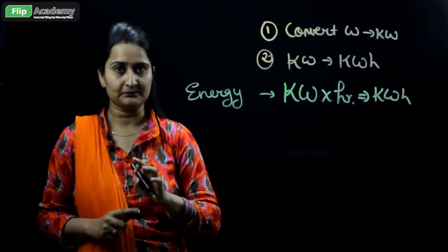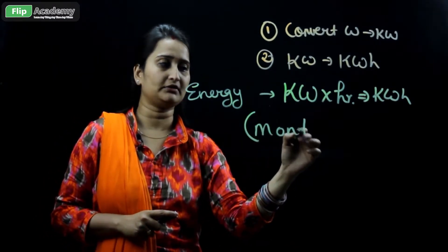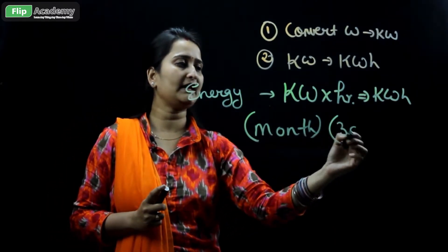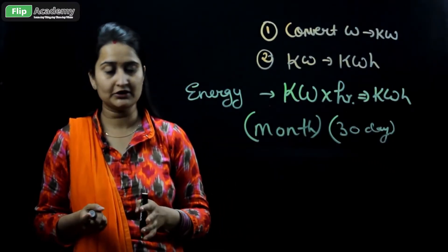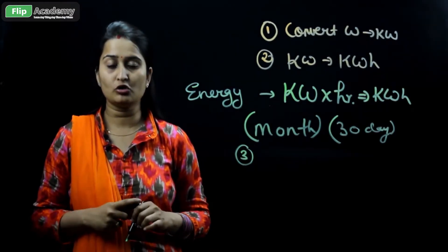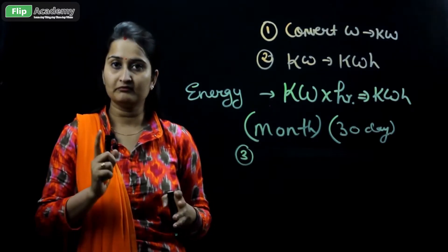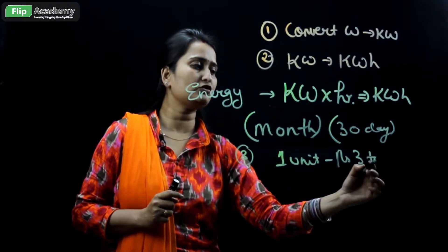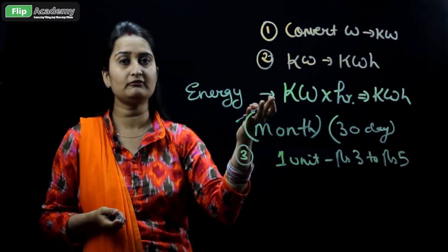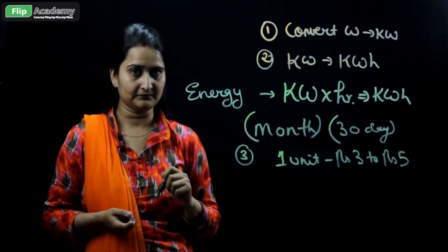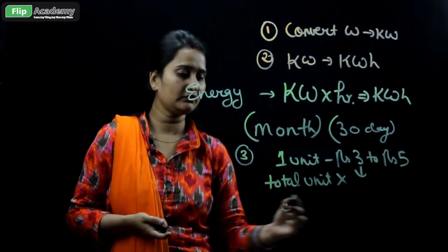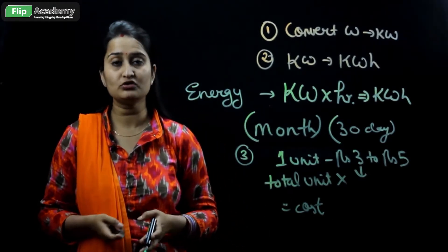The energy calculated by multiplying kilowatt by time should be the energy used in one month. We generally assume one month as 30 days, so you have to find the electrical energy in kilowatt hour for 30 days. The third step is: if you know the unit rate of your particular state — between rupees 3 to rupees 5 — then multiply the total units of one month by the cost per unit to get the total cost of the appliance used in one month.